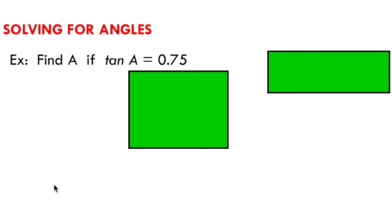Alright, so let's get started. I want to look at a quick example where I'm being asked to find A if the tan of A is equal to 0.75. This is a simple trigonometric equation where I have some unknown angle. The tan of that angle is equal to 0.75 — remember that tan is equal to opposite over adjacent. Now, I can solve for the value of A by using an operation called the tan inverse.